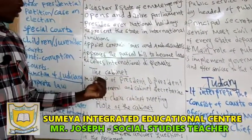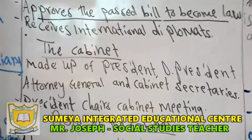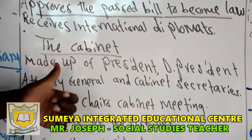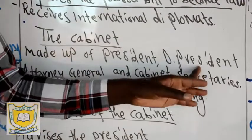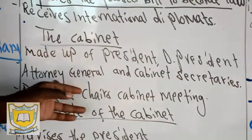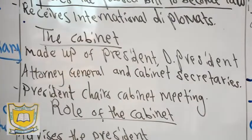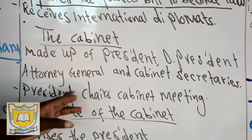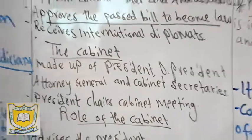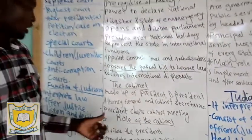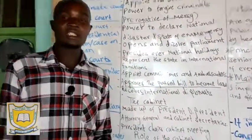Now let us look at the cabinet. The cabinet is an executive arm of the government. It is made up of the president — the head of state — the deputy president, then the attorney general, then the cabinet secretaries. Those are the members who make up the cabinet. The president chairs the cabinet meeting as we said.